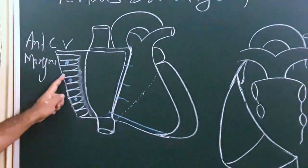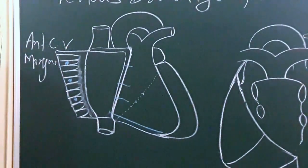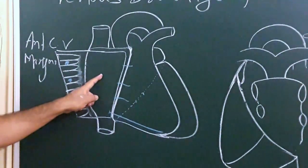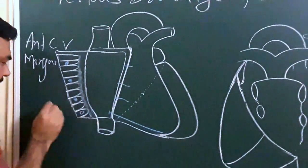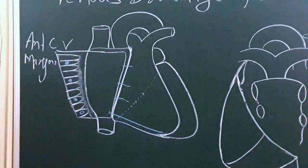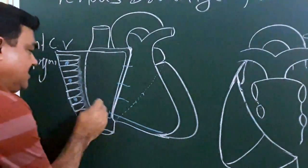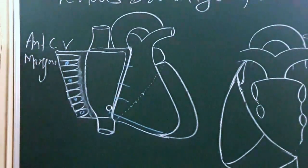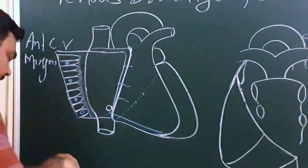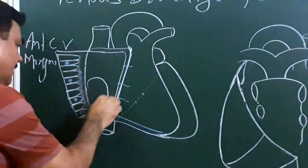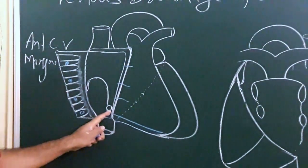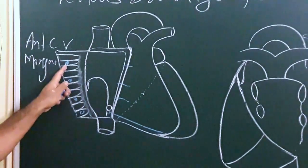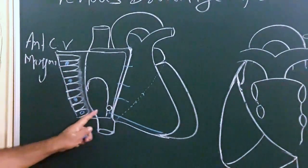These are the openings of the anterior cardiac veins — this chamber is the right atrium. Here is the marginal vein, so here is the opening of the marginal vein. And in this chamber you can see the opening of the coronary sinus. Here you will find the septal wall. So in the right atrium, three veins open: the anterior cardiac vein, the marginal vein, and the coronary sinus.